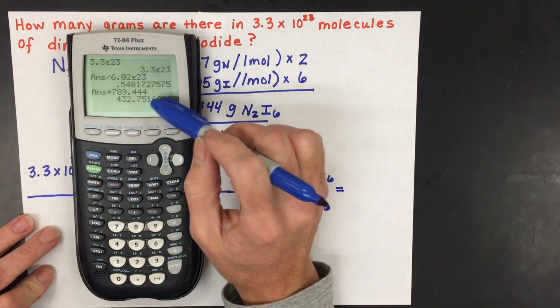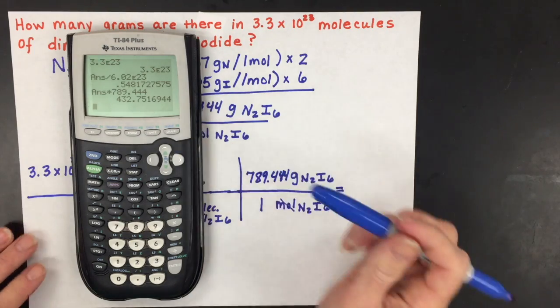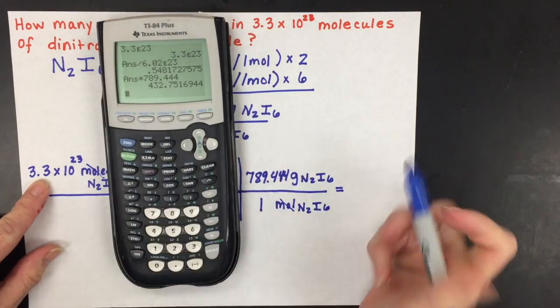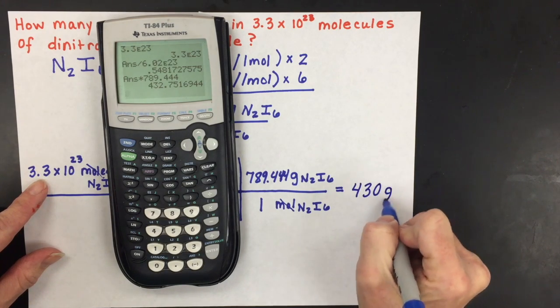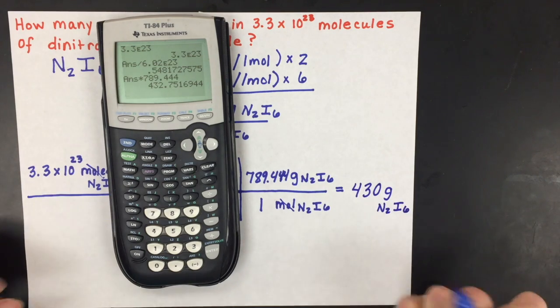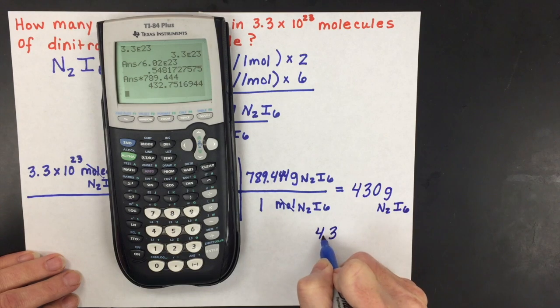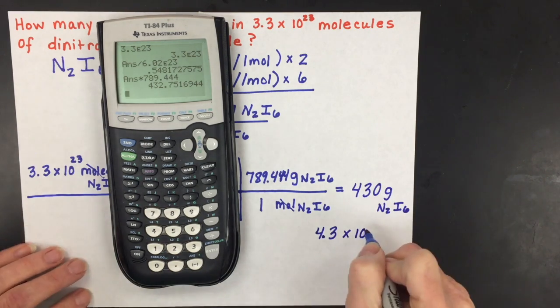And so we get 432.75169.44, which you can't keep all that. We can only keep two significant figures. So we're going to round it to 430 grams of N2I6. You could put this in scientific notation, which would be 4.3. Don't carry the zero, because that would make it have three significant figures.